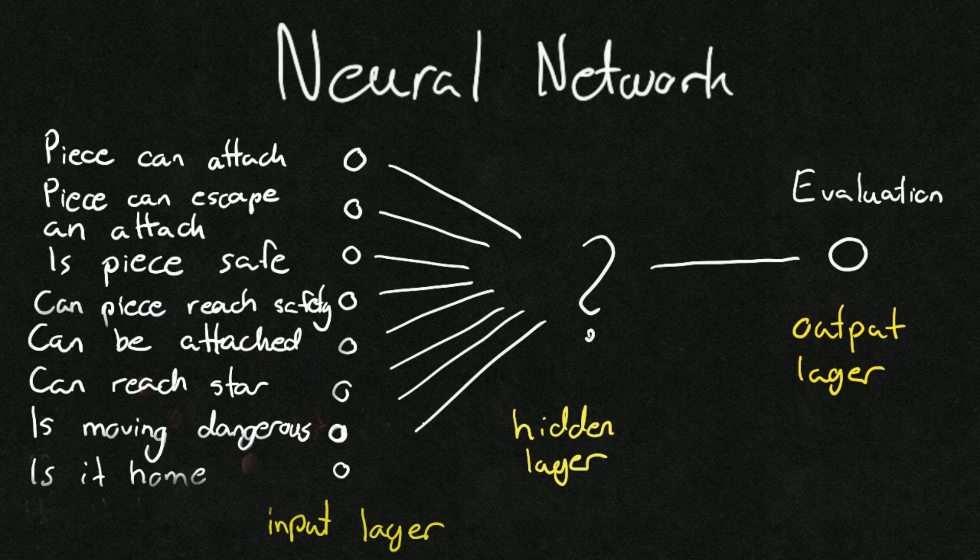We can already now say that the neural network will probably be fairly small because the information can be somewhat easily interpreted. If, for example, the piece has an opportunity to escape an enemy that is attacking, we just likely want that multiplied with something very high, right? And the same can be seen for other pieces.